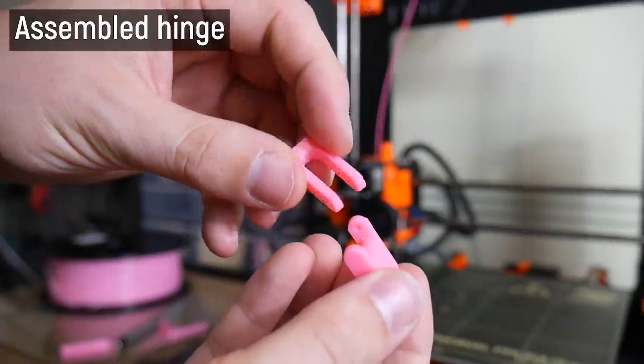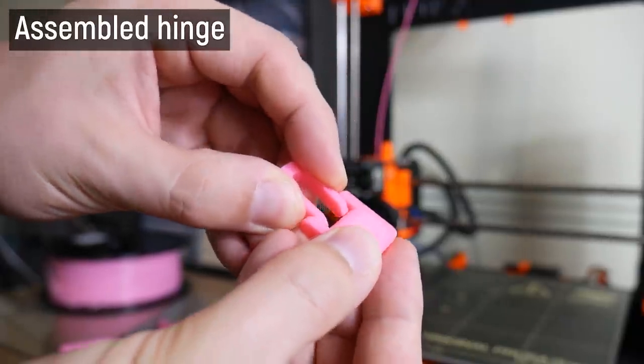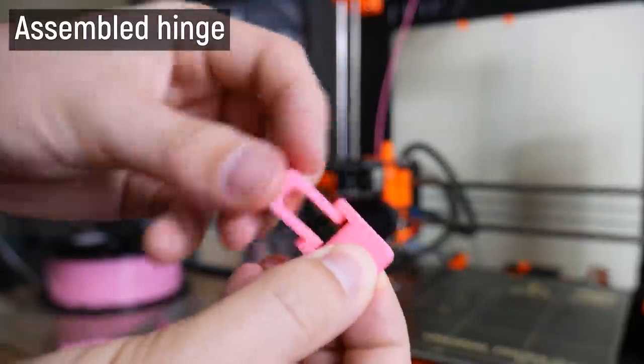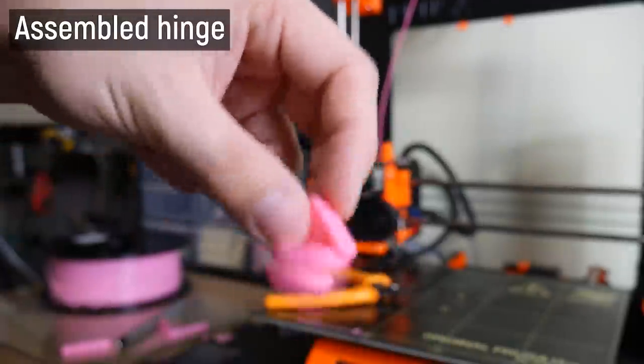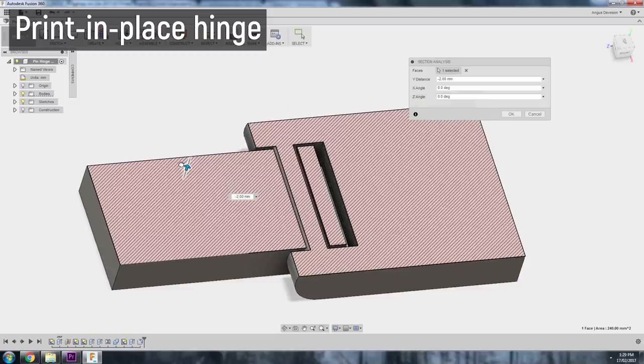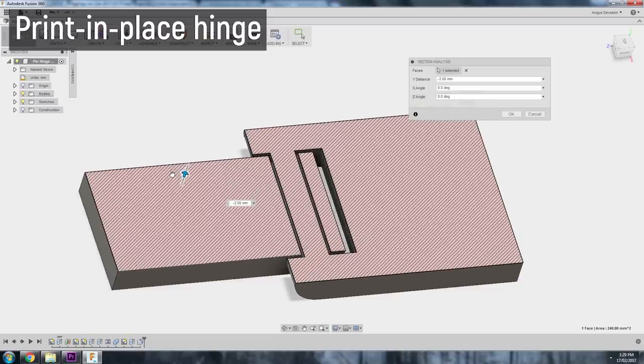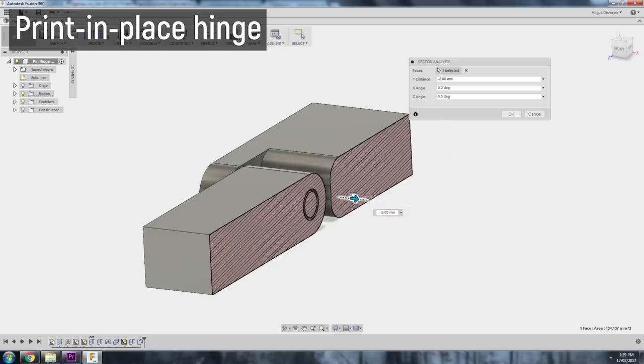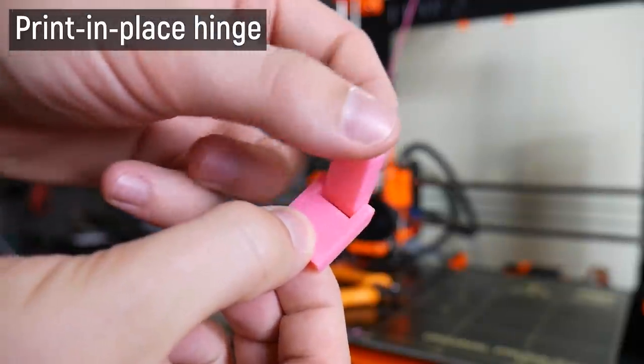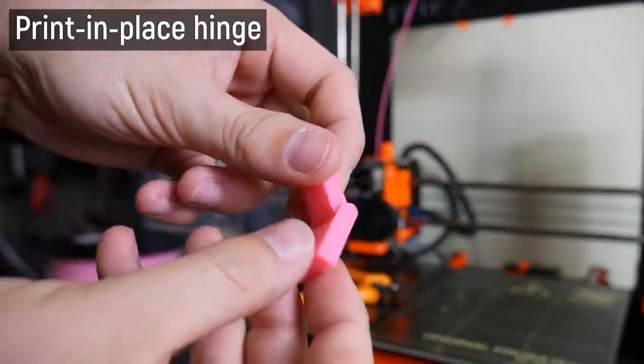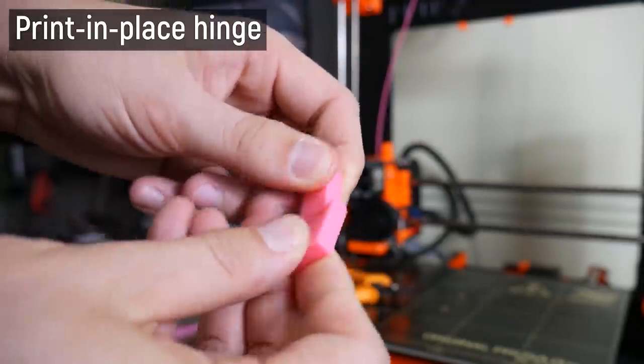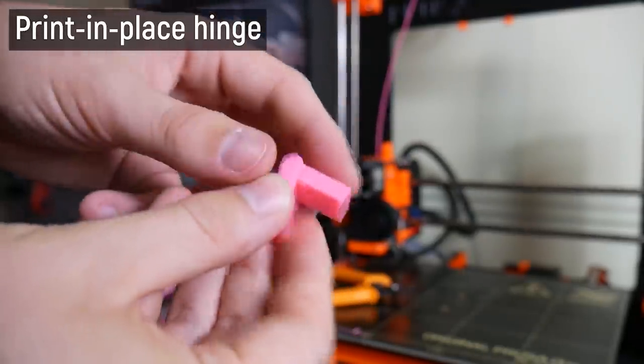The first way is to print the parts separately and assemble afterwards. That way you get quite close clearances and decent accurate hinges, but obviously you need to do the assembly afterwards. The second way is to employ a print in place approach with clearances between each element of the hinge, so it prints without fusing and welding together. You take it off the print bed and those details can pivot and hinge around each other. That works pretty well for some applications, but it means you have quite large clearances between the parts, so the hinges tend to be fairly floppy and loose.